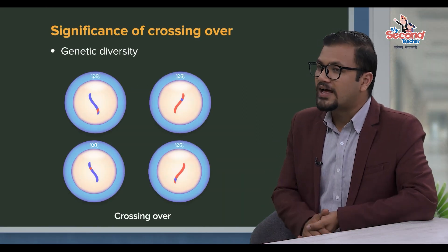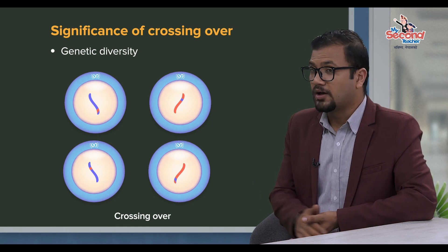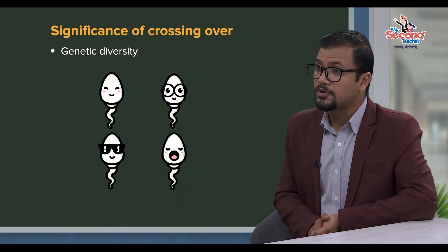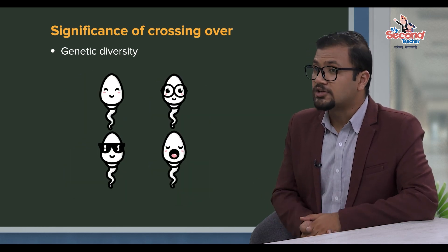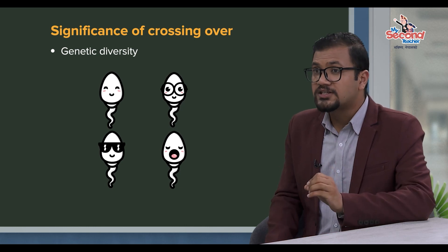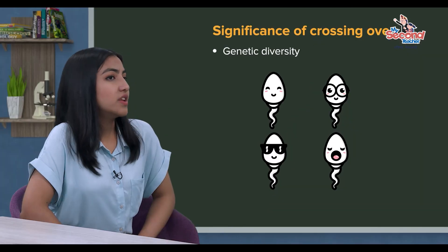Crossing over is when genetic material is exchanged by the organism, producing gametes with genetic diversity. That's 100% genetically diverse, not identical.